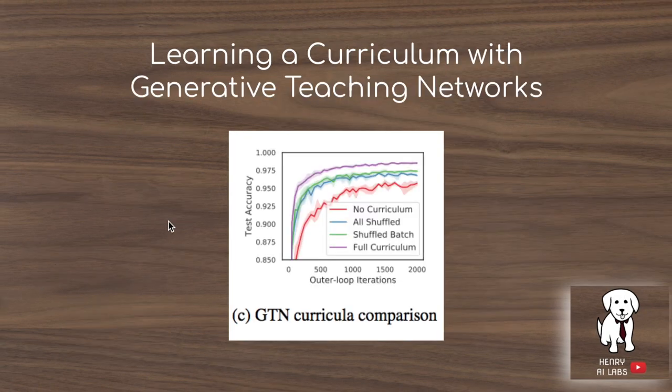The next idea they explore is curriculum learning — ordering the way data points are presented to the classifier. Rather than giving data points from the generative teaching network to the classifier randomly, they use a fixed order. The plot shows that using the full curriculum variant outperforms having no structure to the way data is presented to the classifier.